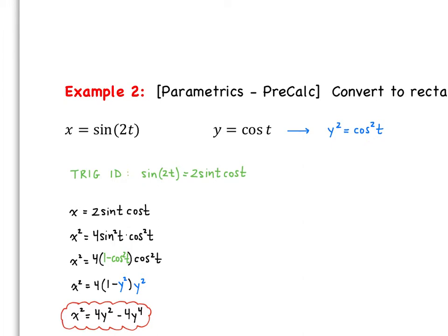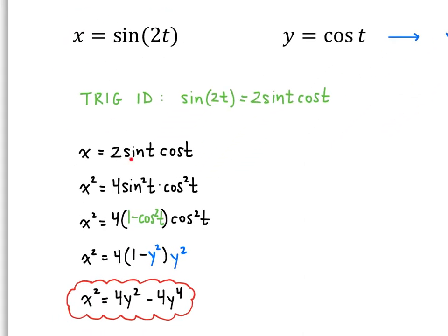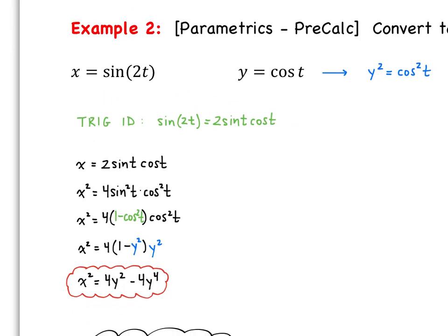So as we rewrite x to be 2 sine t cosine t and square both sides, we get 4 sine²t cosine²t. We have our trig identity: sine² = 1 minus cosine². We determined that cosine² is really y². So wherever cosine² appears, we substitute y², and now we just clean it up. We were able to eliminate the parameter.